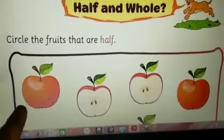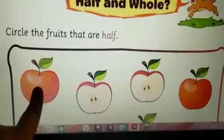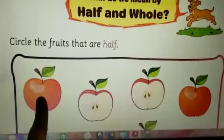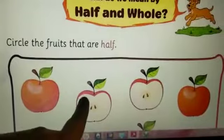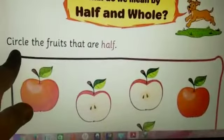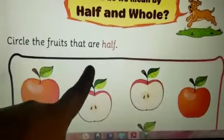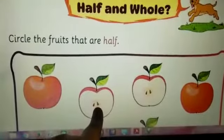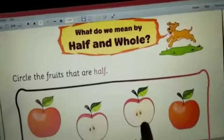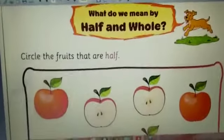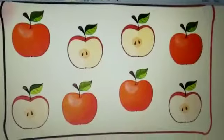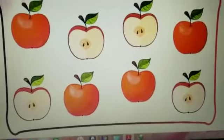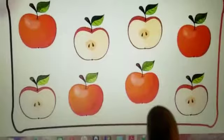See the pictures. This is full, so whole. And this is half, so you have to circle the fruits that are half. In this picture, this is half, and this is also half. You have to circle on it. So here is the whole picture — you have to circle only the half one.